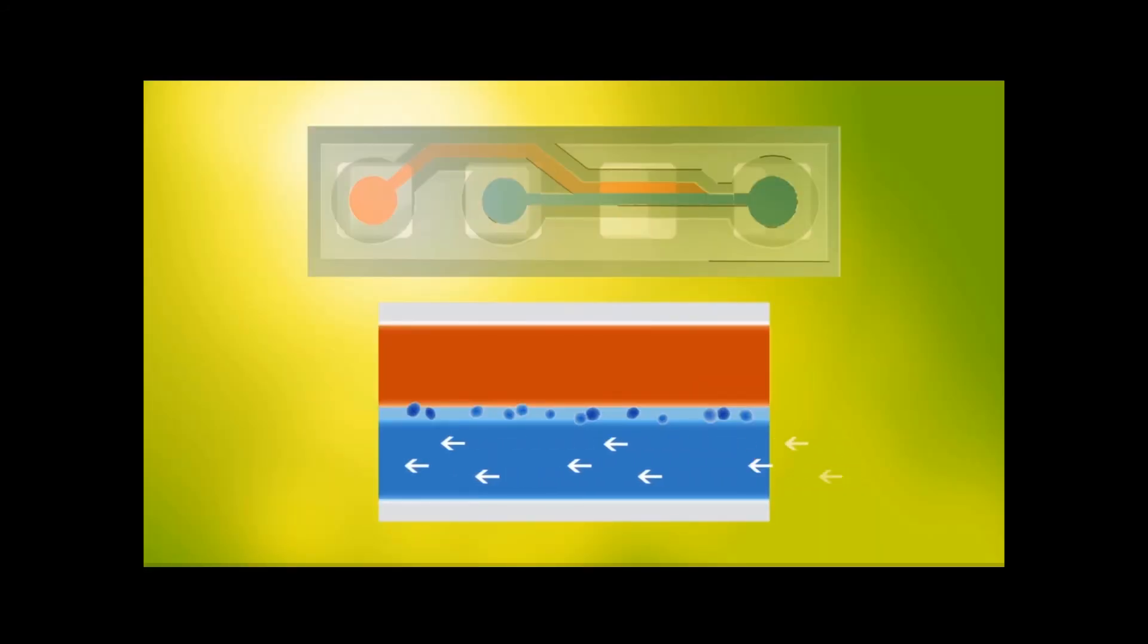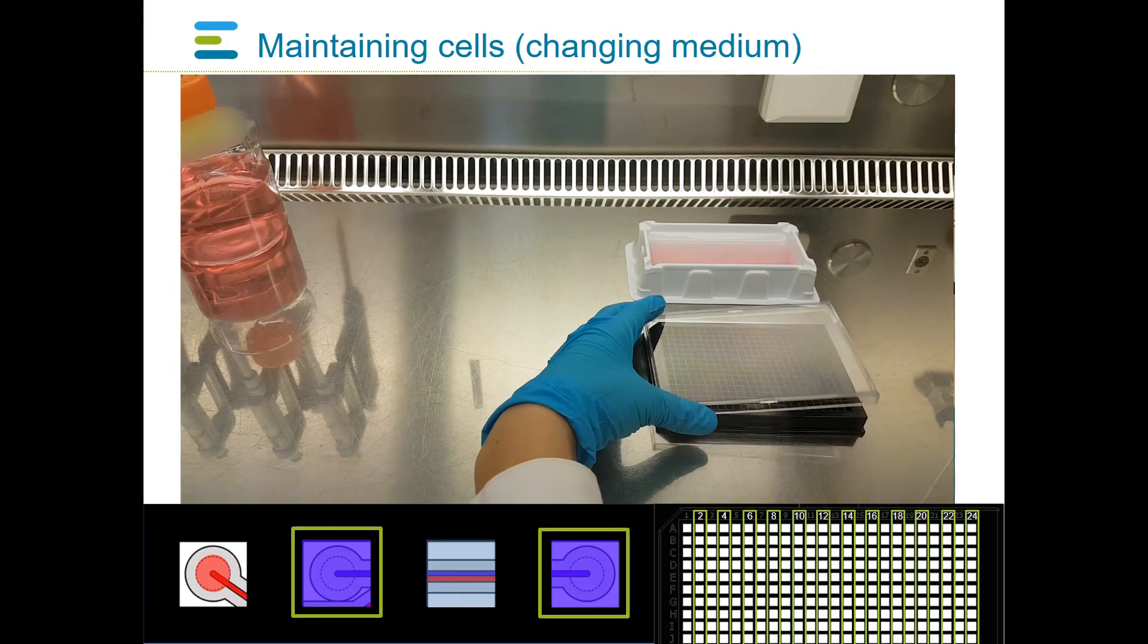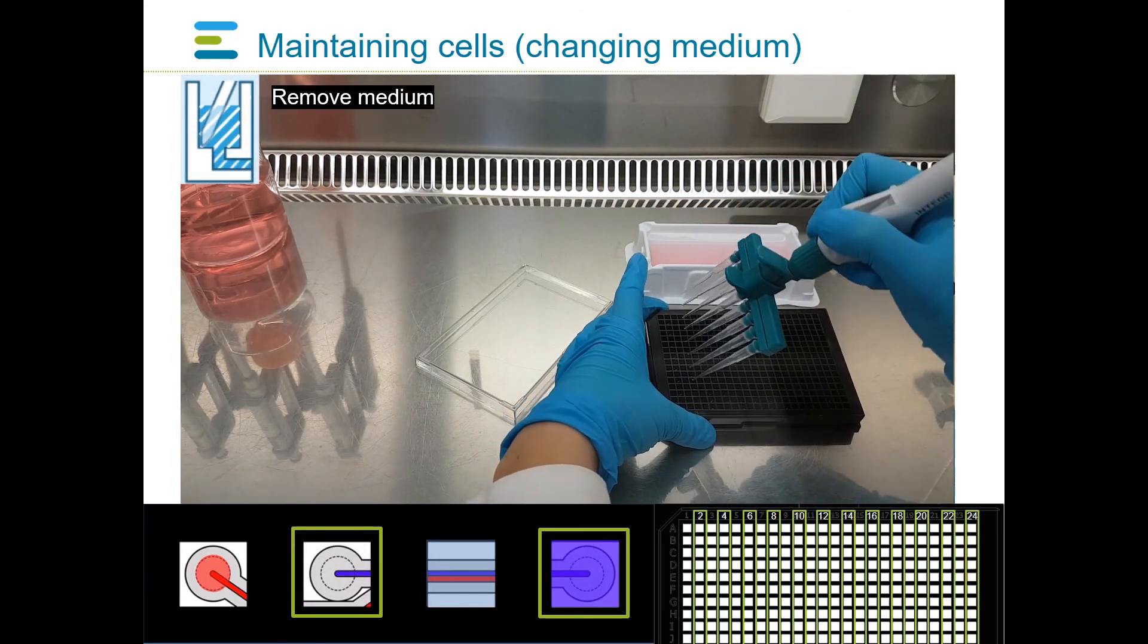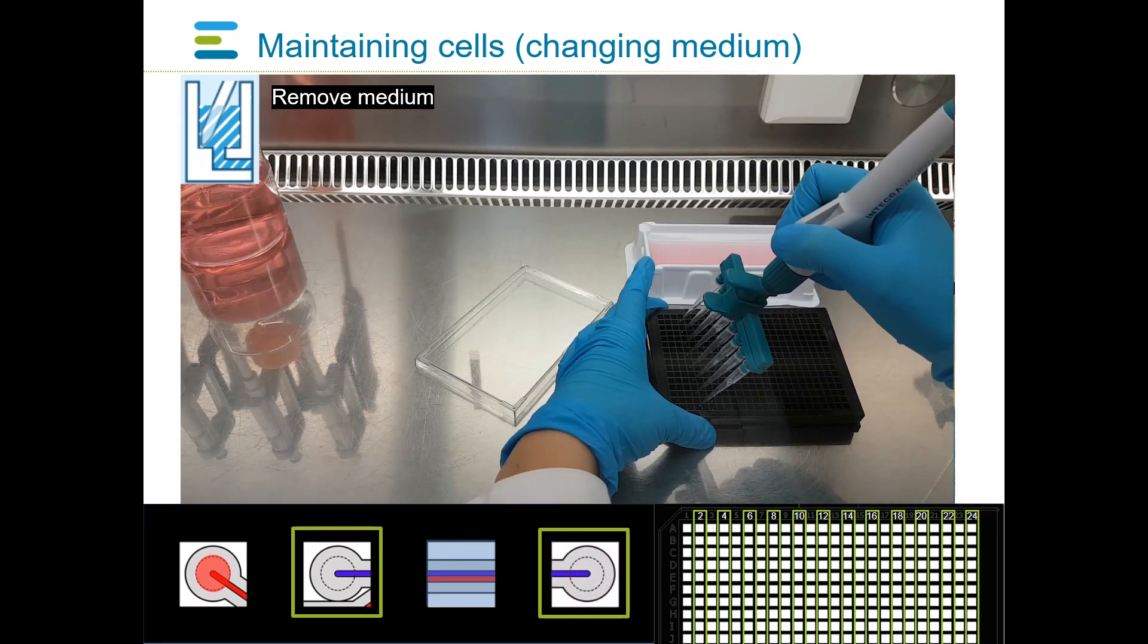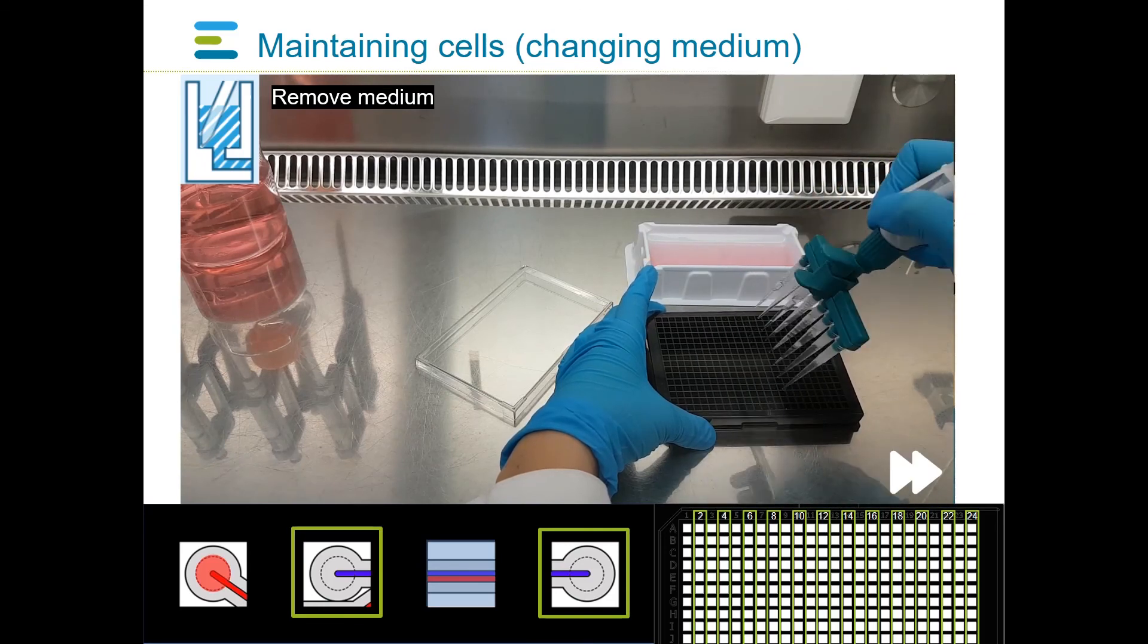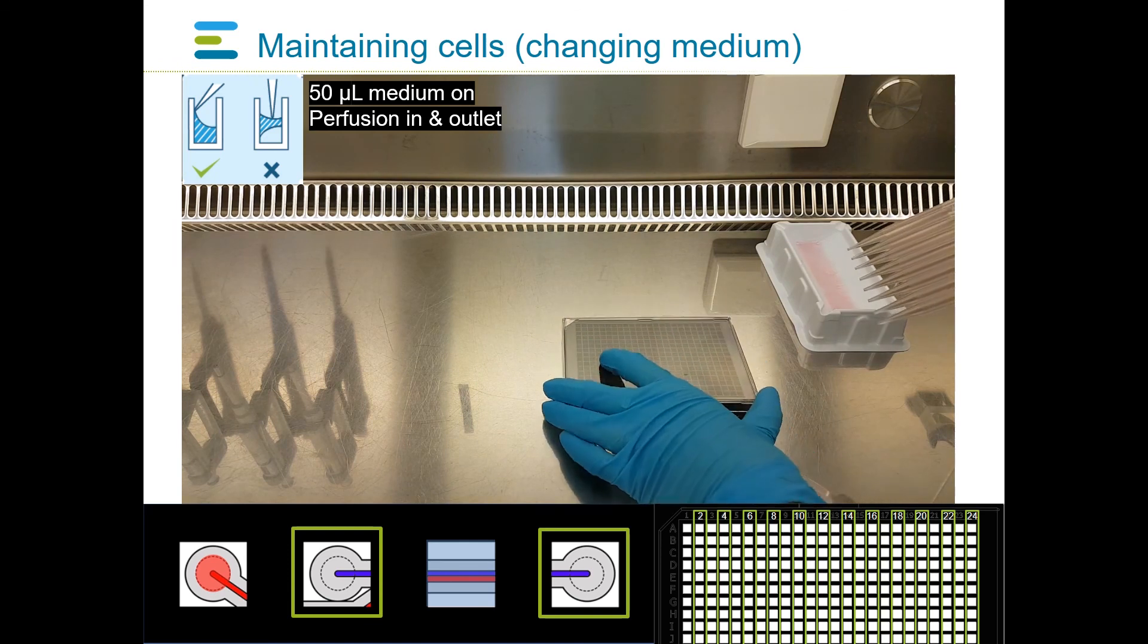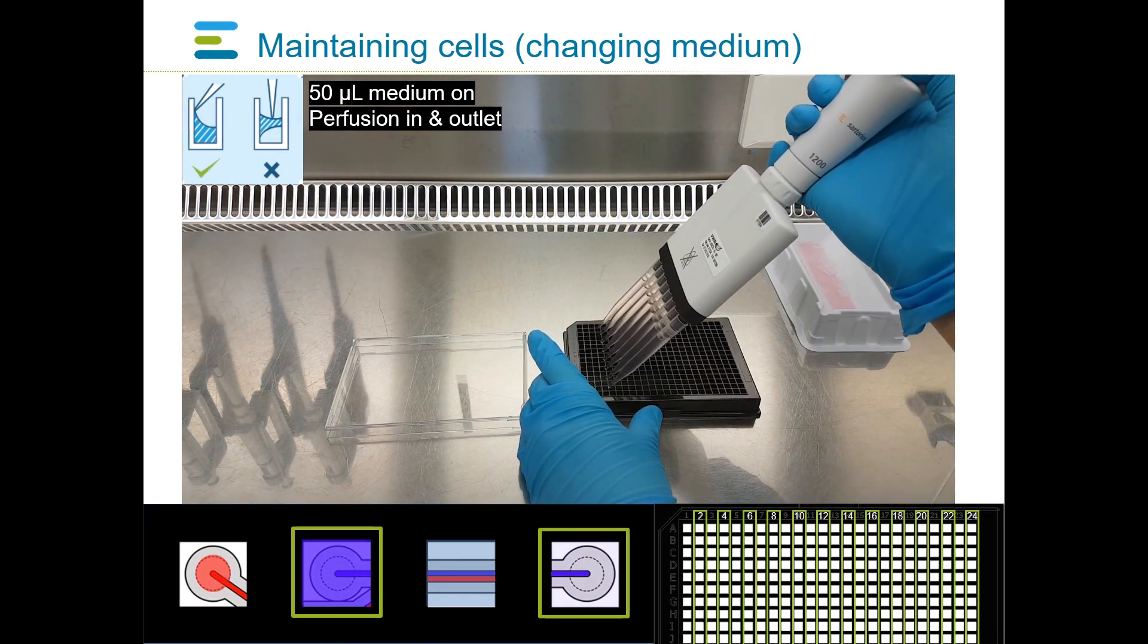After perfusion has started, cells will start to proliferate and grow into a tube lining the perfusion channel. During routine maintenance, medium can be aspirated through a multi-channel aspirator. Wells can be emptied completely to the bottom without risking aspiration of medium in the microfluidic channel itself. After aspiration, 50 microliters of medium can be added to all perfusion inlets and outlets using a multi-channel pipette.